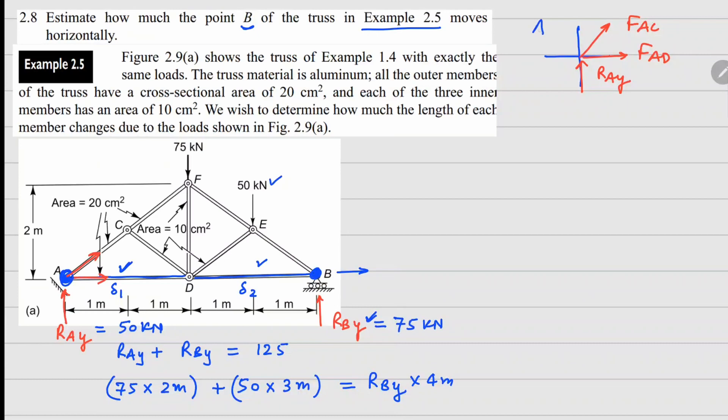To write the force balance equation for joint A: FAC divided by square root 2 (this angle is 45 degrees because in the bigger triangle, this width is same as this height of 2 meters) plus FAD equals zero. In the Y direction, we have FAC over square root 2 plus RAY equals zero. From these two equations, you can see that FAD equals RAY, so FAD is 50 kN.